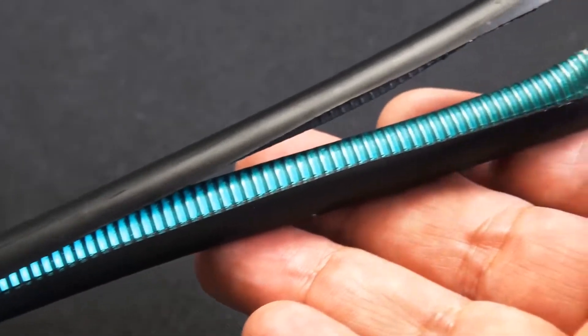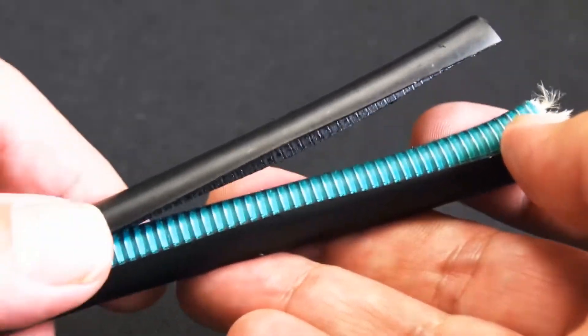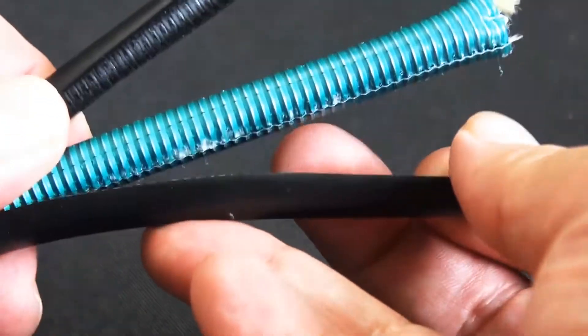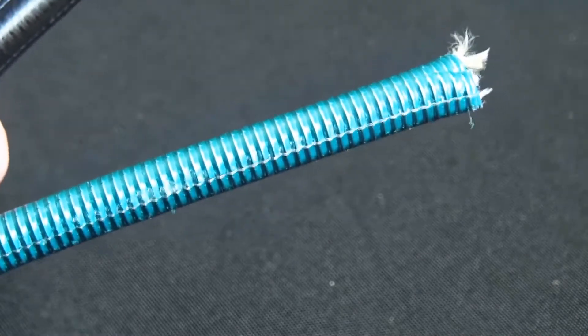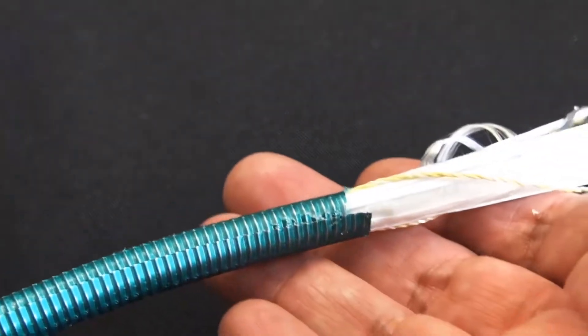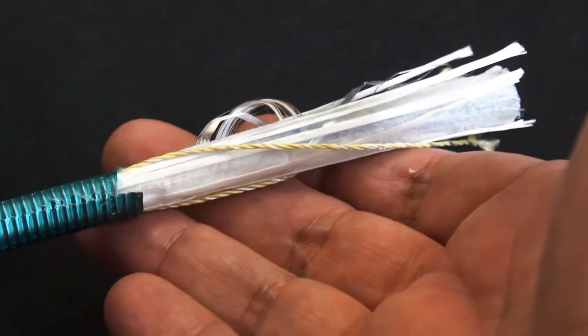This is the series 12 dry light, single jacket, single armored cable. This is also single mode and its applications are for outside plant, direct barrier, conduit, or aerial.